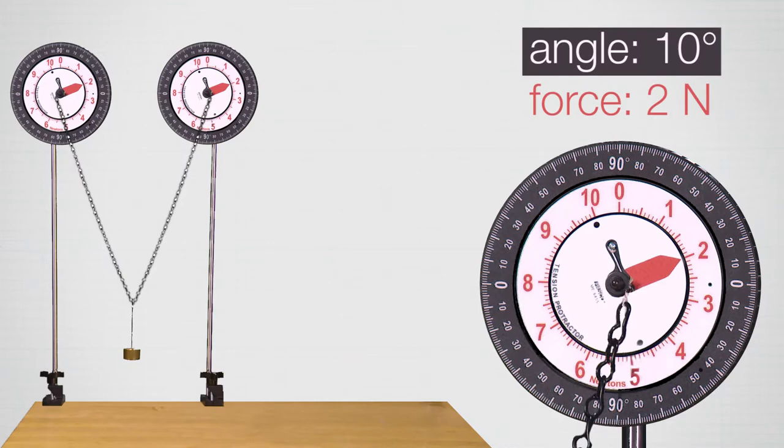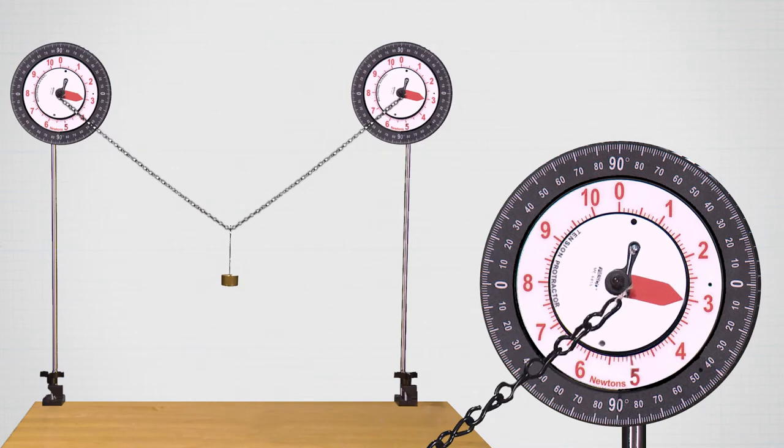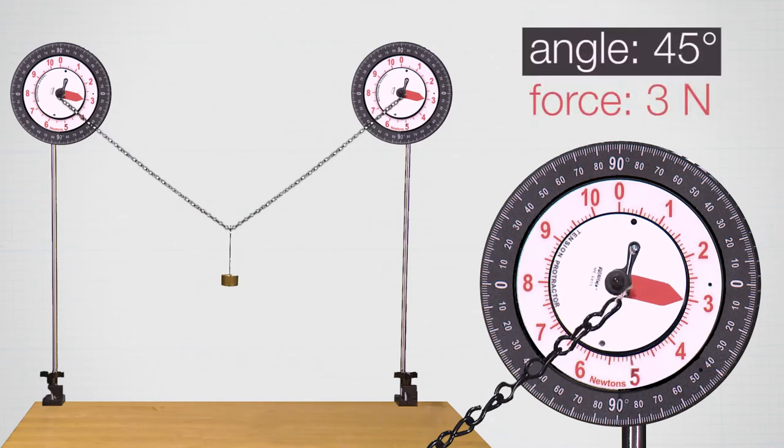We read that the angle was 10 degrees from vertical, and in this scenario with the steeper angle, we read that the force in the funicular form on both sides was two newtons, so the force decreased. If we then moved the tension protractors further apart, so the angle got shallower, and the forces in the chain actually increased, so we read an angle of 45 degrees on the tension protractor, and we got a force of three newtons, so a higher force.